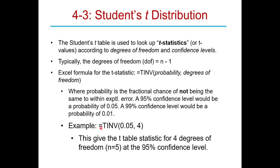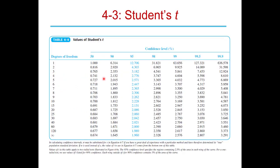As an example, you could type =TINV(0.05, 4) — that tells Excel to find the 95% confidence interval t-value for four degrees of freedom, which should agree with the table value of 2.776. In Excel, you'll probably get more decimal places than the three shown in the table.